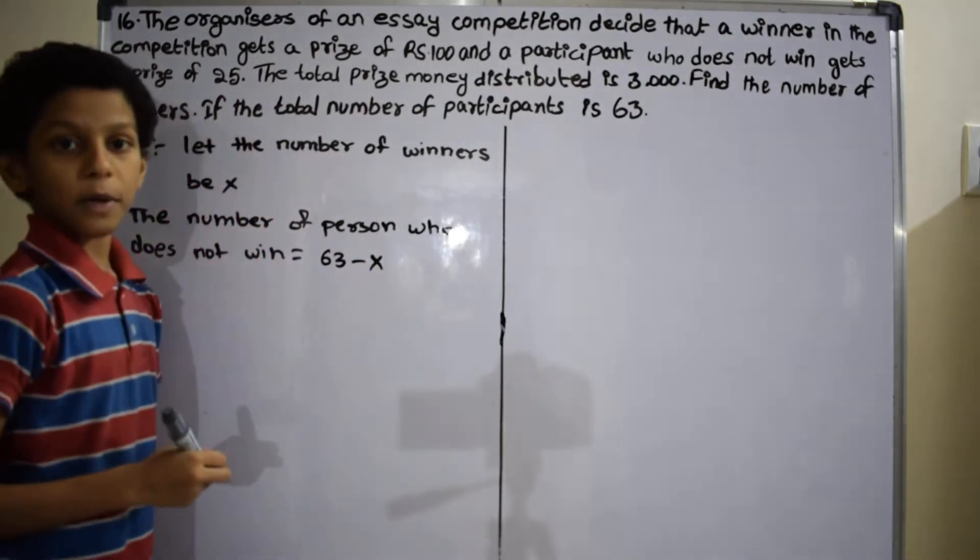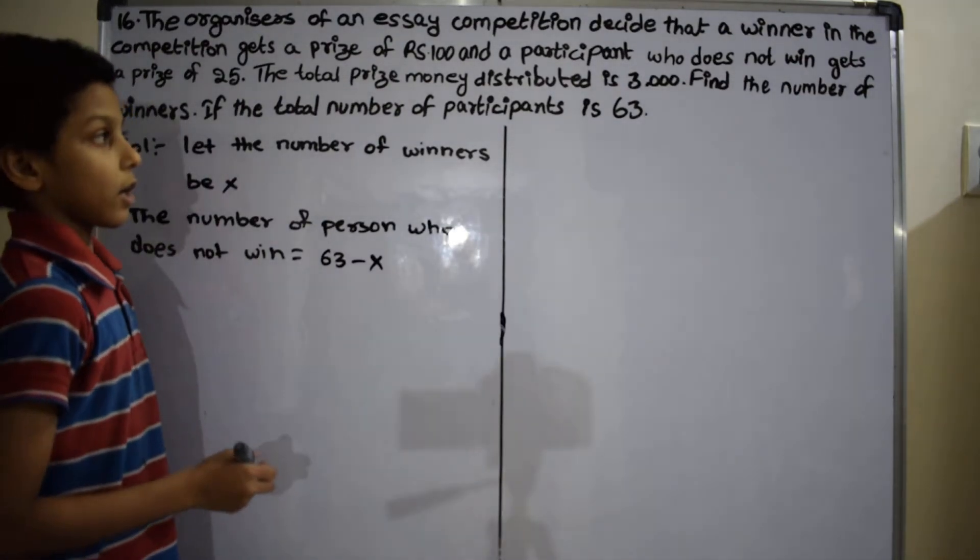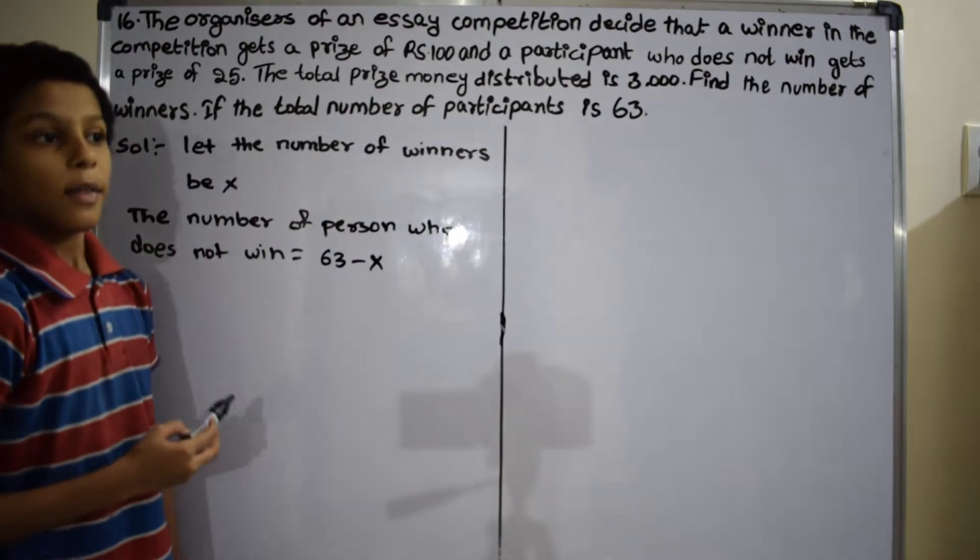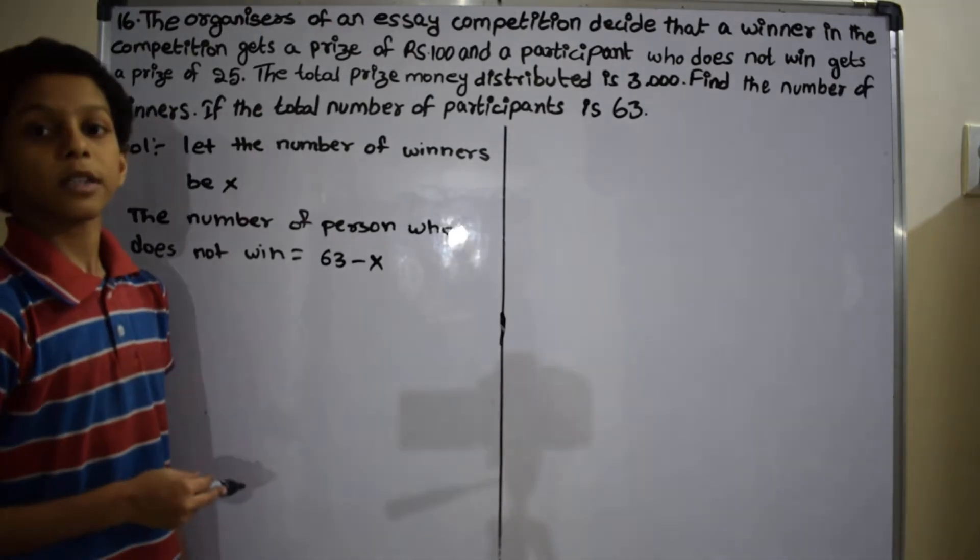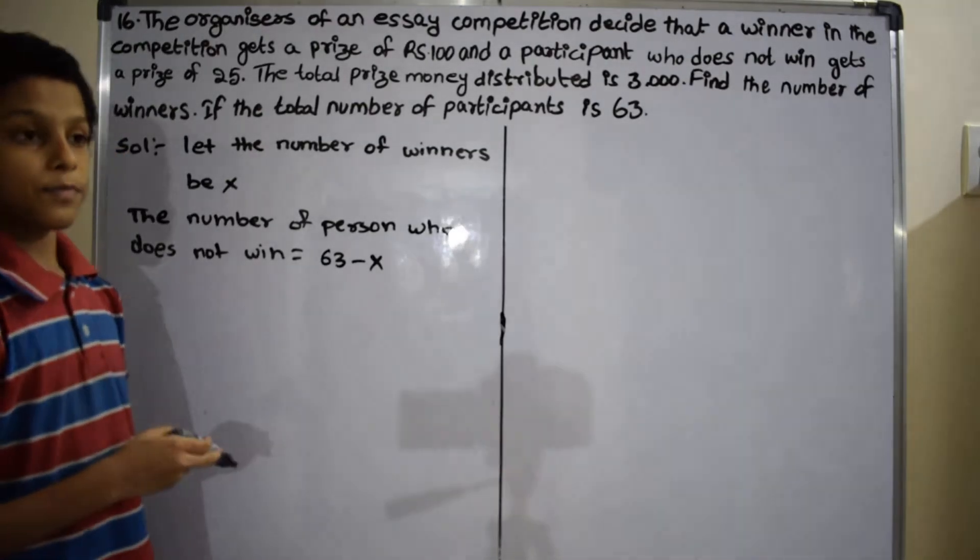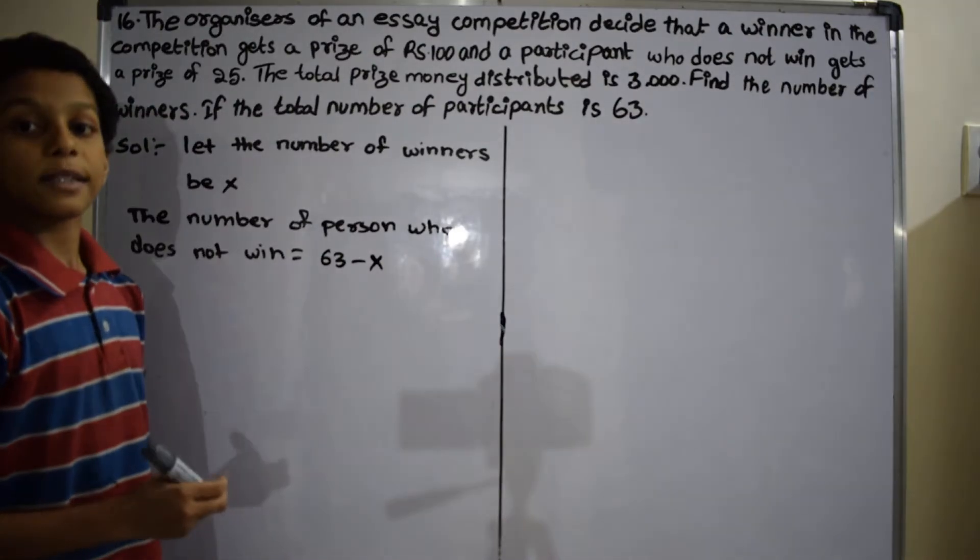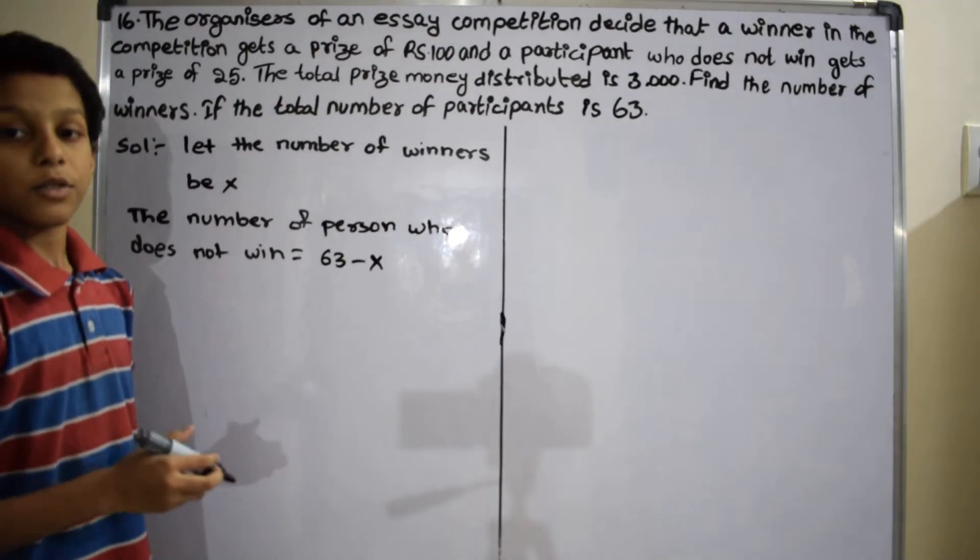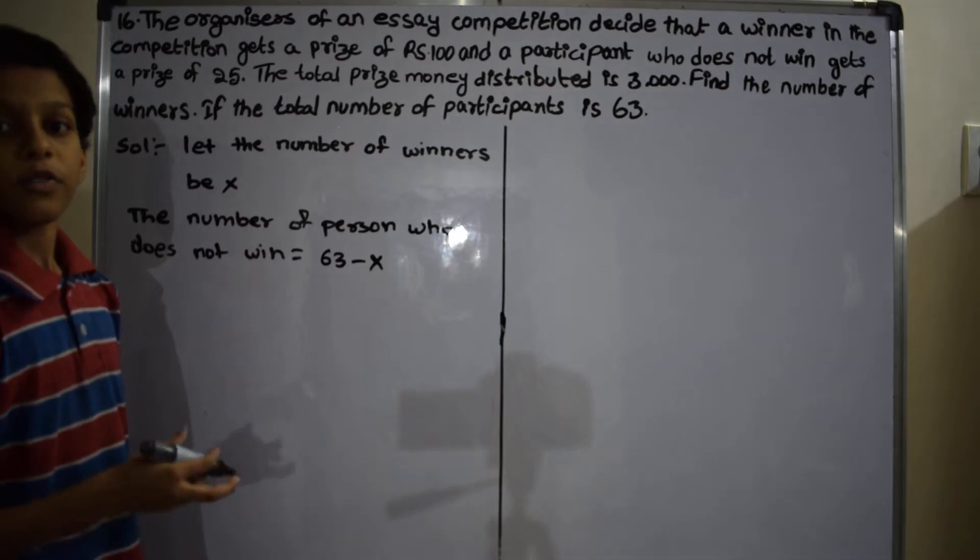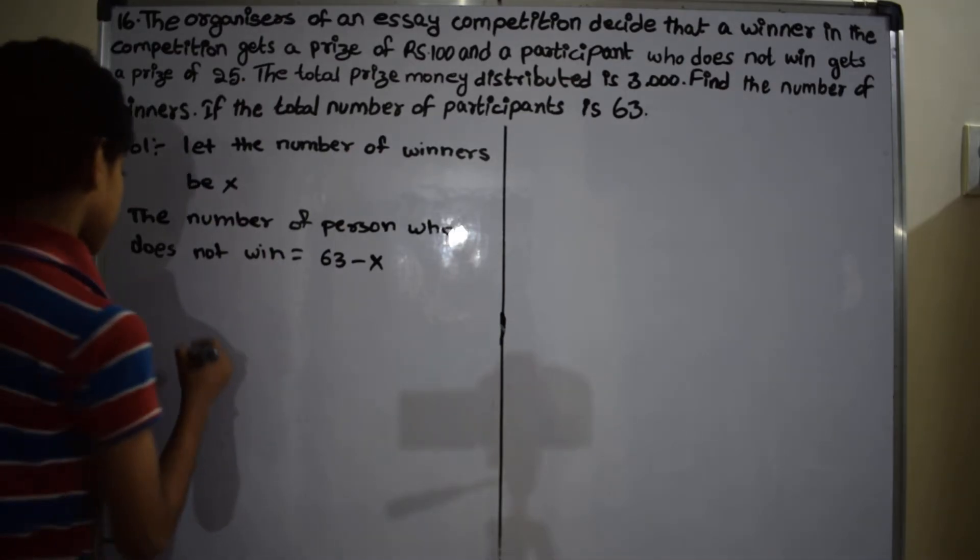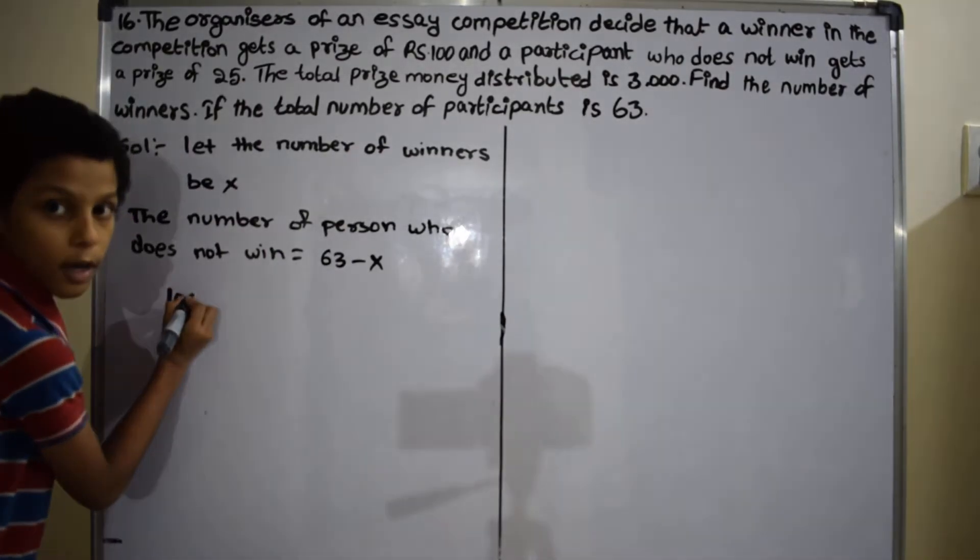Now we form an equation for the given problem. According to the given problem, they have prize money of 3,000. From that money, winners get 100 rupees and losers get 25 rupees. Then the equation becomes 100 times x.